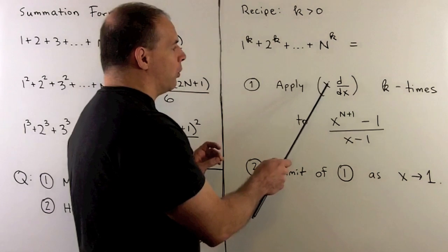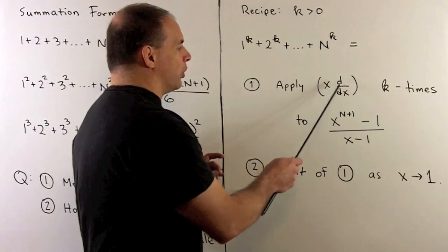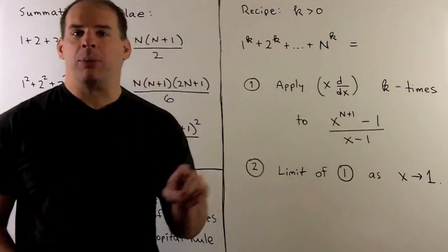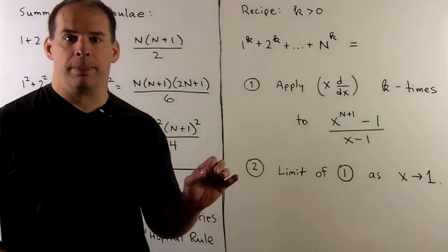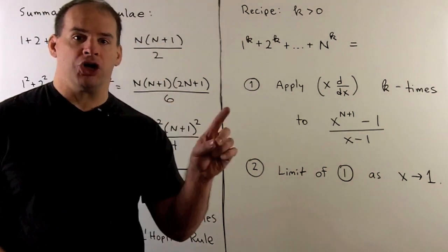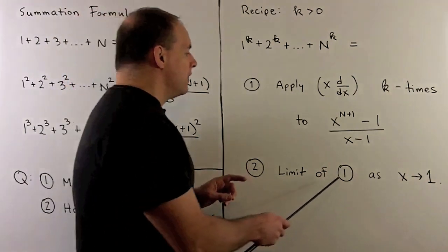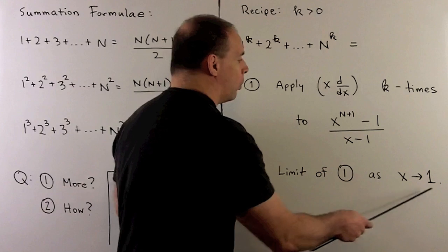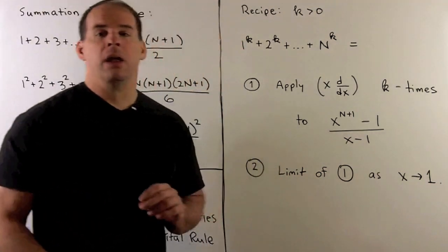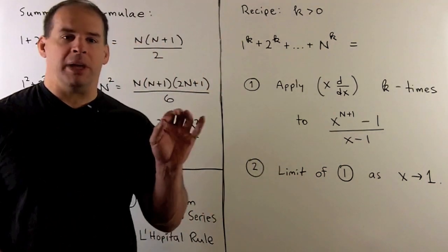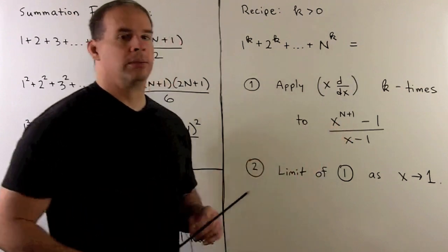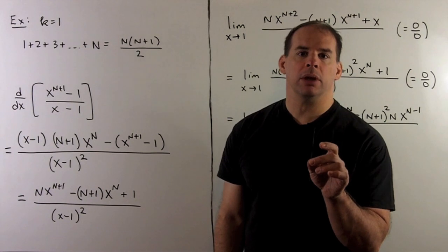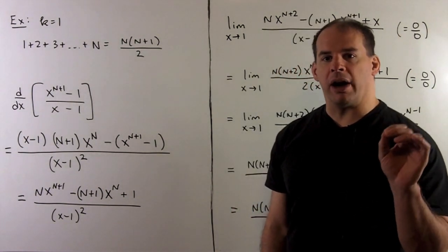And I'm going to apply—what do we do? We're going to take the derivative of our function, then multiply it by x, and repeat that process k times. That's going to give us a function. Then we're going to take that function, take the limit as we let x go to 1. The number that comes out is going to be our answer here.